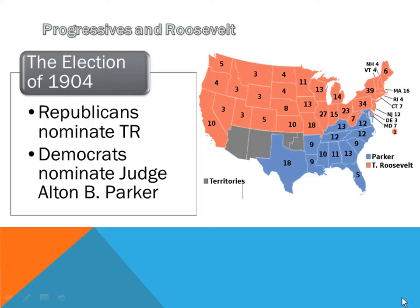The Democrats chose someone nobody had ever heard of — Judge Alton B. Parker — and ran on the platform of free silver, a dead issue. They knew there was no chance against Theodore Roosevelt. Only the South voted for Parker because he was a Democrat. The South was solidly Democrat and wouldn't vote Republican until 1928, and even that was a fluke.